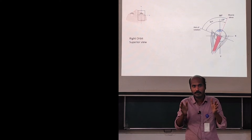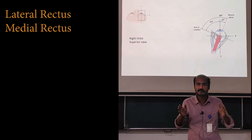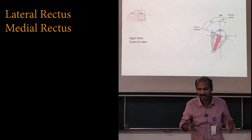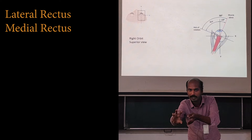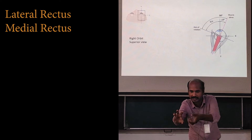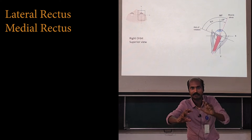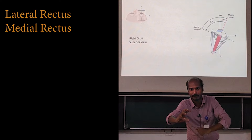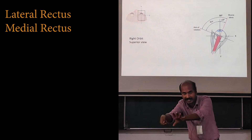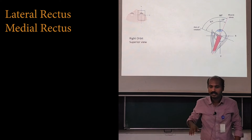The first group of muscles I want you to learn is the medial rectus and lateral rectus, because that is the easiest. This is the eyeball in a primary gaze position. When the right medial rectus contracts, it will cause adduction of the right eyeball. When the right lateral rectus contracts, it will cause abduction of the right eyeball.